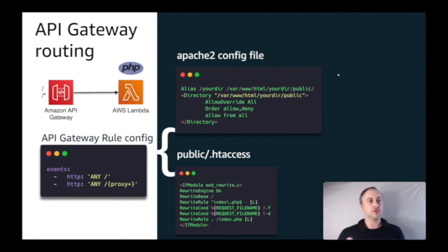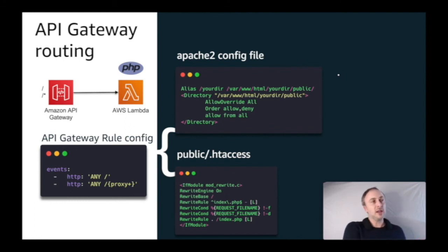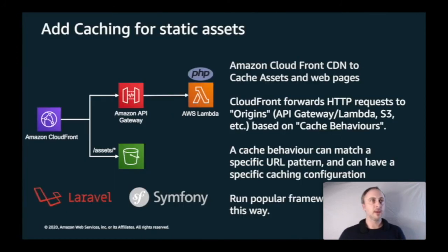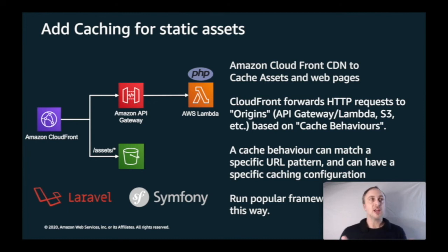The Lambda function handler is invoked every time a request comes in, similar to the traditional index.php being the first point of call in a traditional LAMP stack. On the right is an Apache 2 config file where you set the directory and use an .htaccess file to route requests to index.php. On the left is a similar setup where API Gateway catches every request and sends it to a single Lambda function — configured with two simple API Gateway rules. Because of Lambda's scalable nature, you have a very scalable PHP application without managing any infrastructure.